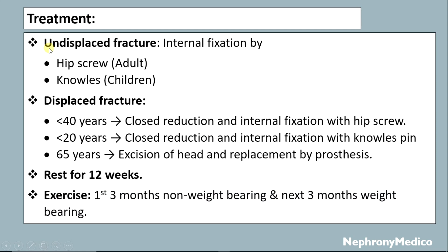Treatment: for undisplaced fractures, internal fixation by hip screw in adults or nails in children should be done. For displaced fractures in patients less than 40 years, closed reduction with internal fixation using a hip screw is done; in those less than 20 years, closed reduction with internal fixation with nails is performed. For patients 65 years or older, excision of the head and replacement by prosthesis should be done.